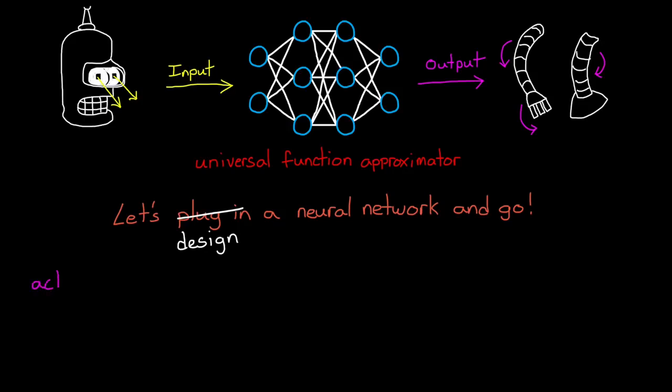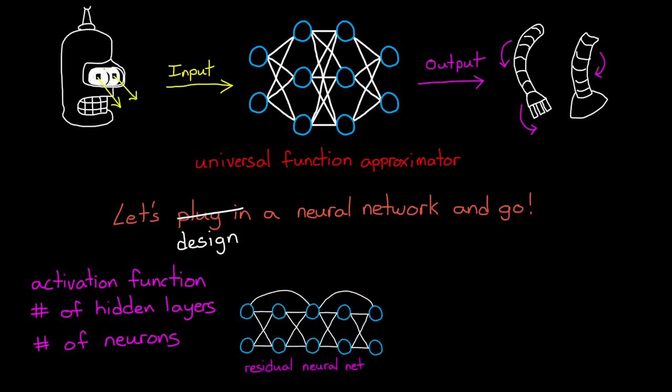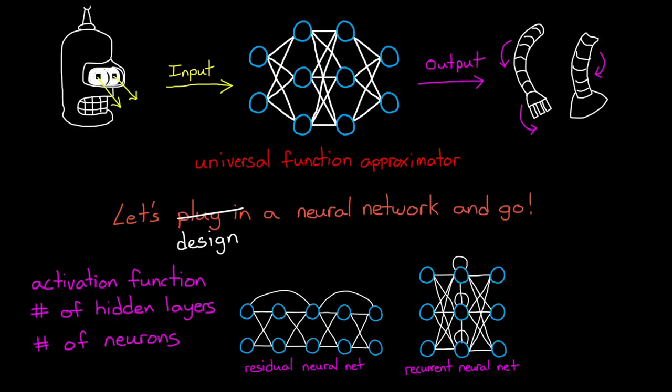For example, as we've already seen, we need to choose an activation function, and the number of hidden layers, and the number of neurons in each layer. But beyond that, we also have control over the internal structure of the network. Should it be fully connected like the network I've drawn? Or should the connection skip layers like in a residual neural network? Should they loop back on themselves to create internal memory with recurrent neural networks? Should groups of neurons work together like with a convolutional neural network? And so on.